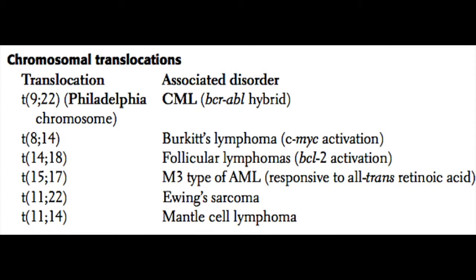The first translocation is the chromosome 9 to 22 translocation, which causes the Philadelphia chromosome, the BCR-ABL fusion protein, and chronic myelogenous leukemia. Next, we have the 8;14 translocation, which is seen in Burkitt's lymphoma.